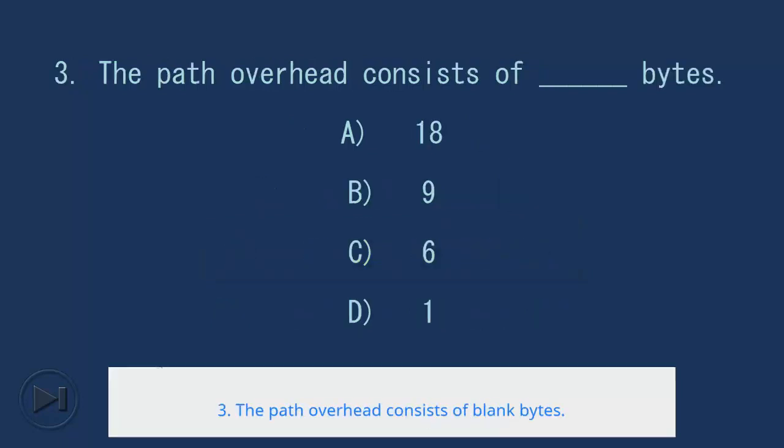3. The path overhead consists of blank bytes. A. 18, B. 9, C. 6, D. 1. Answer: B. 9 bytes.